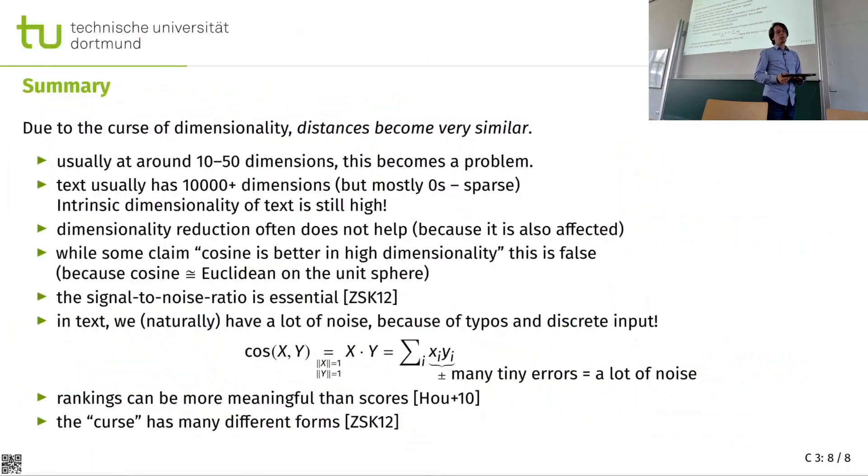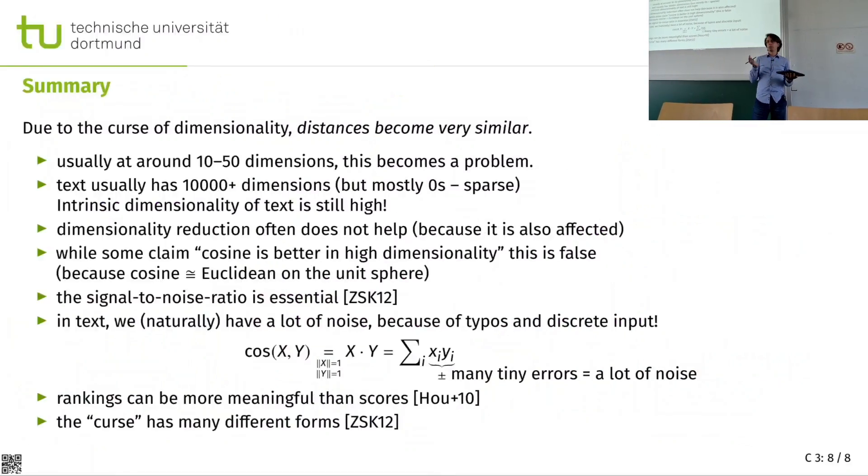So in summary, usually at some 10 to 50 dimensions, we start seeing this type of problem. It can be earlier if we do a grid type of enumeration. It can be later if we have intrinsic dimensionality. Text data tends to have more than 10,000 dimensions. And even with intrinsic dimensionality, that behavior is usually that of several hundred dimensions.